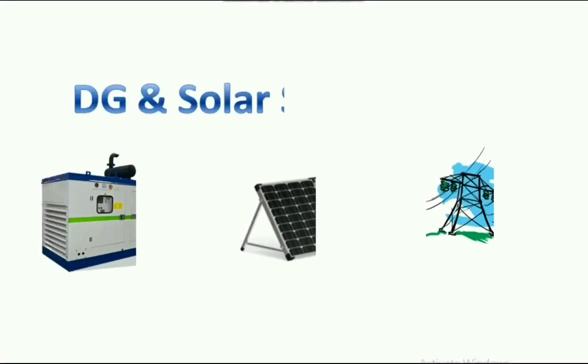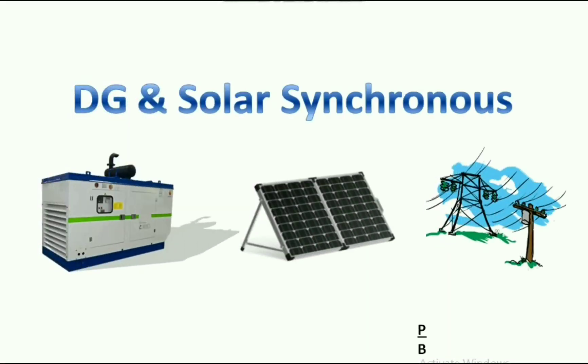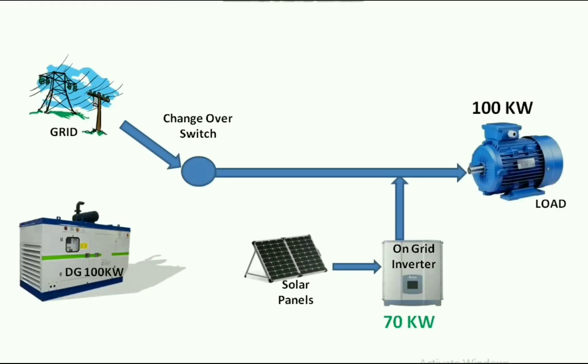Hi, this is Manage. In this presentation we can understand how solar can be synchronized with a diesel generator. Let us consider a system in which a 100 kW load with 3 sources are present. The sources are: grid, a 100 kW diesel generator, and a 70 kW solar plant with an on-grid inverter.